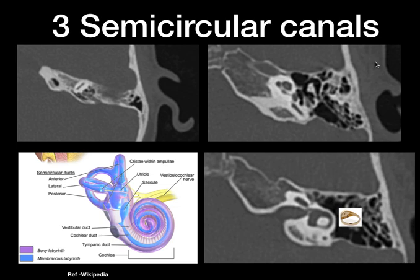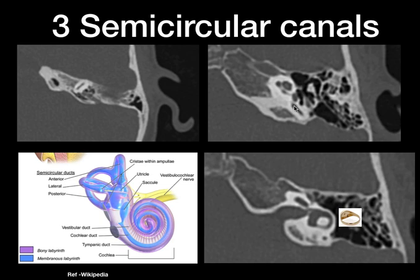Coming to the three semicircular canals — when scrolling through the temporal bone in the axial plane from above, the first structure encountered is the superior semicircular canal. Going down gradually, we get the horizontal or lateral semicircular canal, which gives the signet ring appearance on the axial plane — the ring, the vestibule, and the lateral semicircular canal. Going further down, you can see the posterior semicircular canal. Look for the presence of all three and also for any semicircular canal dehiscence in the coronal plane, which can lead to vertigo and imbalance.